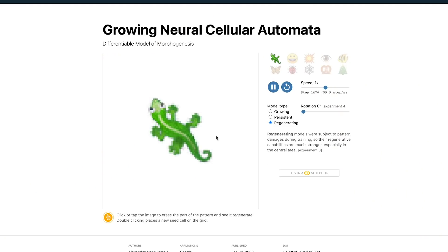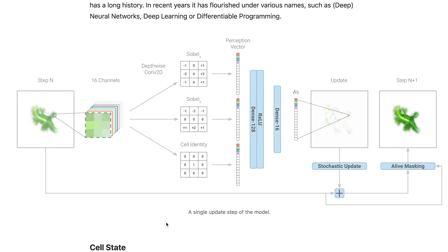In normal cellular automata, we have a grid of cells that update based on a predefined rule. When it comes to neural cellular automata, we create a neural network that can learn that rule based on what we'd like our automata to eventually generate. For every step in the update rule, we take each pixel or cell of our image, which has red, green, and blue channels, and create a perception vector — essentially looking at the change in the color channels for neighboring cells in both the x and y direction. From there, we feed that through a neural network, which is trained to update all of our cells to the next step.